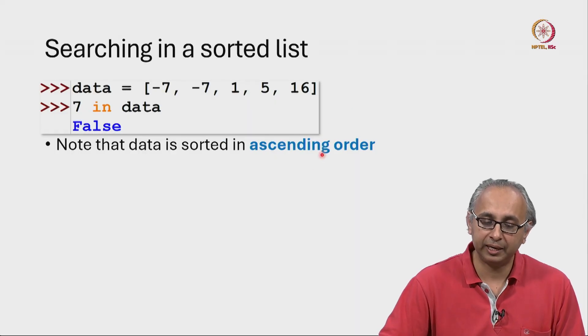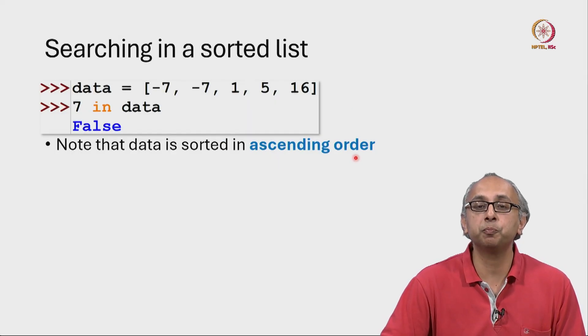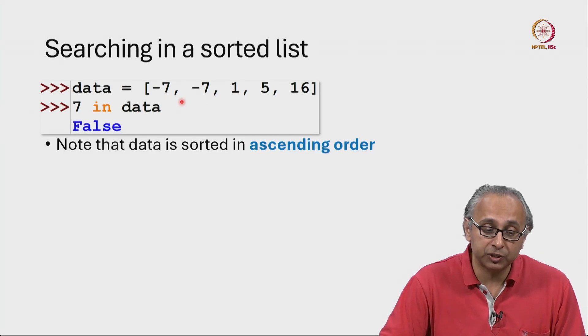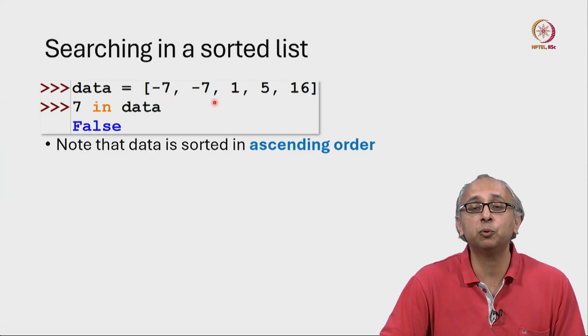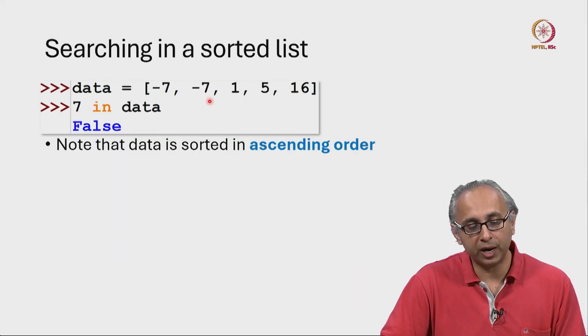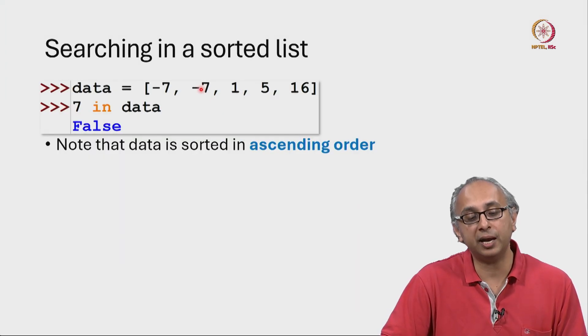Now I want to be clear that by ascending order, we don't mean that the next item is strictly bigger than the previous item. You could have a situation where two items are equal. But in ascending order, you never have a situation where you have some larger item immediately followed by a smaller item.